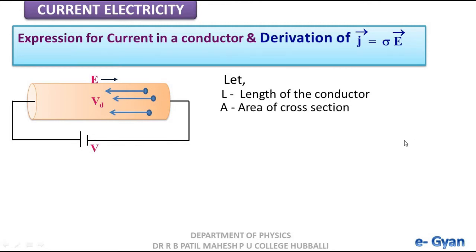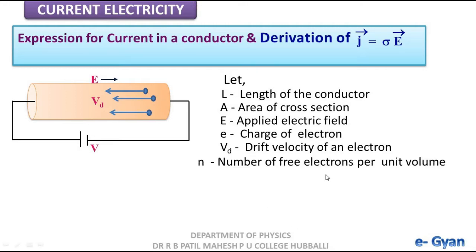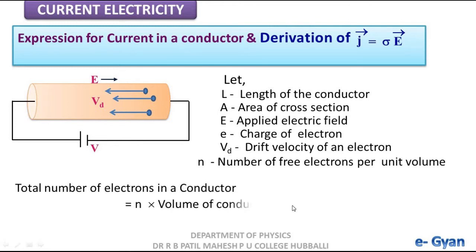Let L be the length of the conductor, A the area of cross-section, E the applied electric field, e the charge of an electron, Vd the drift velocity, and N the number of free electrons per unit volume. The total number of electrons in the conductor equals N multiplied by the volume of the conductor, which is N into A into L.